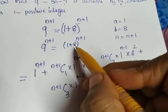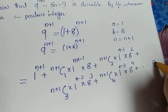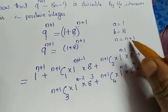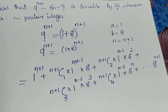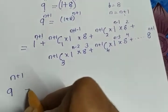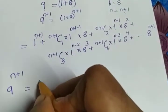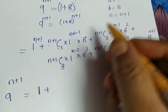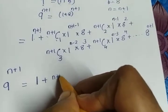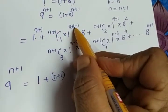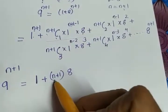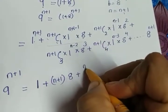Since it is raised to n+1, the last term is 8 raised to n+1. So 9 raised to n+1 equals 1 (since 1 to any power is 1) plus (n+1)·8, because (n+1)C1 = n+1, plus (n+1)C2 · 8² plus (n+1)C3 · 8³ plus (n+1)C4 · 8⁴ plus ... plus 8 raised to n+1.